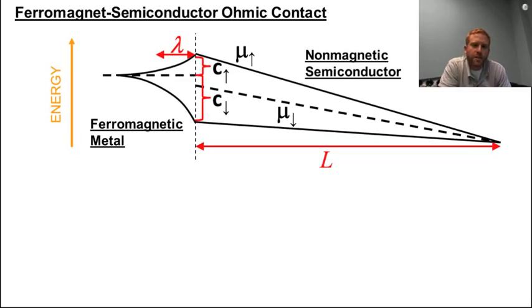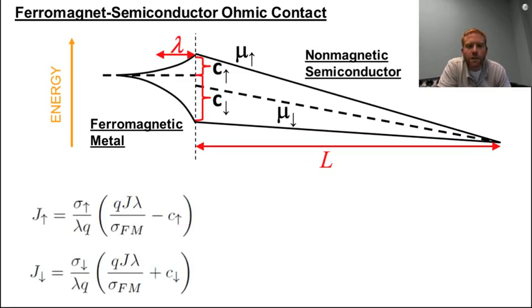By once again applying Ohm's law, we get the following expressions for the current densities of spin up and down on the ferromagnet side. Note that there are two important differences between these expressions for the ferromagnet and the ones above describing transport in the semiconductor.